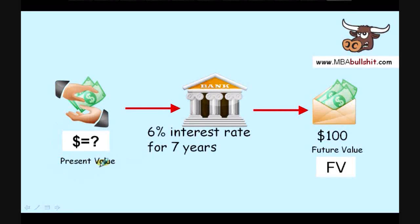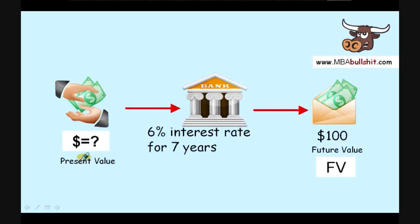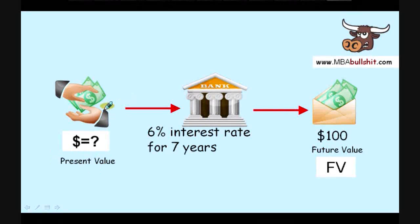I highly recommend using the word 'past value' instead of 'present value' because 'present value' can be confusing — the meaning of 'present' can change depending on how the story is told. However, in business school, your professor will almost always call this 'present value,' even when talking about the past. So don't be confused — present value and past value are the same thing mathematically.